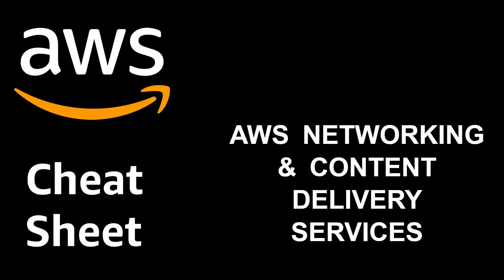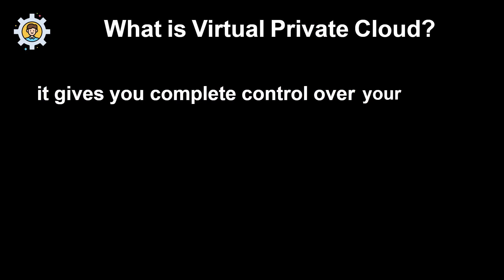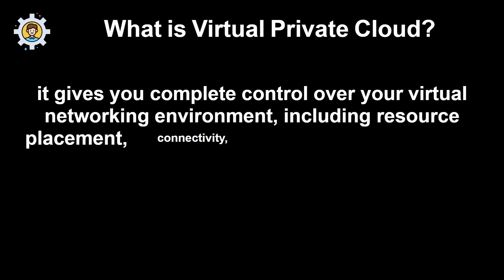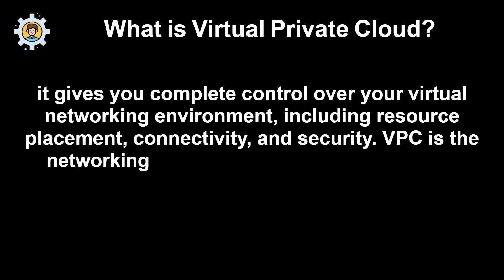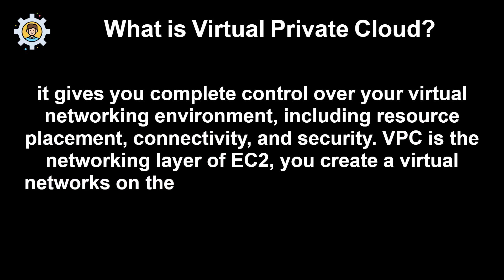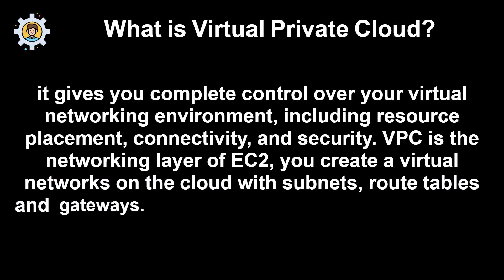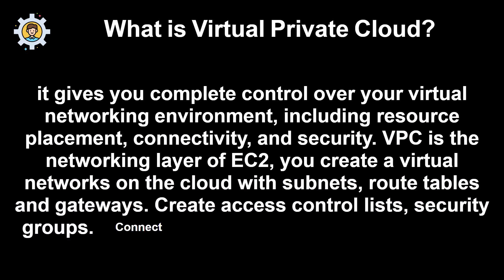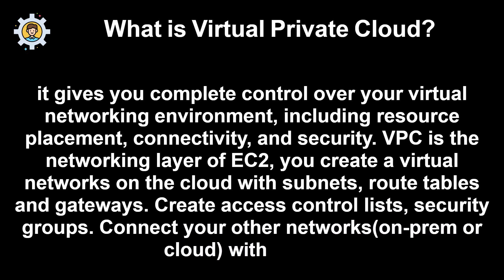AWS Networking and Content Delivery Services. What is Virtual Private Cloud? It gives you complete control over your virtual networking environment, including resource placement, connectivity, and security. VPC is the networking layer of EC2. You create virtual networks on the cloud with subnets, route tables, and gateways. Create access control lists and security groups. Connect your other networks on-premises to the cloud with VPNs.